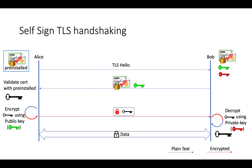This is the typical flow of TLS we have seen. Of course, a few more details are involved, like which algorithm to use for encryption and what the key size is, but overall this is the TLS flow. Now someone might ask: if Alice already has Bob's certificate, why is Alice asking Bob for the certificate again?